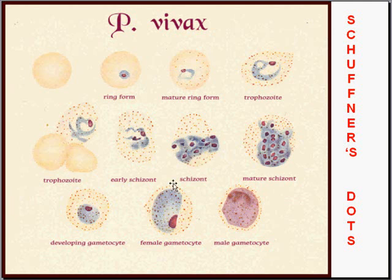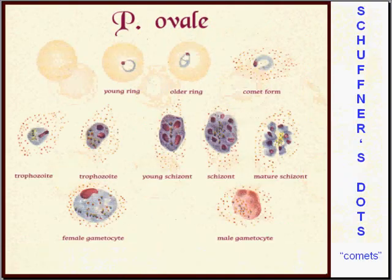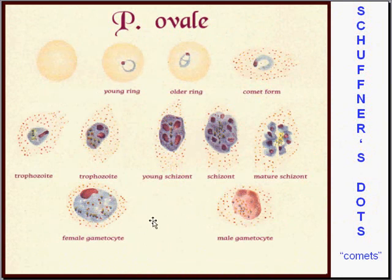Falciparum and malariae do not have Schuffner's dots. Speaking of malariae, you go from ring form to schizont to gametocyte. And in the last form — ovale — you're going from ring forms to schizonts to gametocytes. And like vivax, ovale also has the Schuffner's dots. So it is easy to get ovale confused with vivax on a regular smear. But normally you don't have to figure out which species it is — all you have to do is look at which species is endemic to the area.